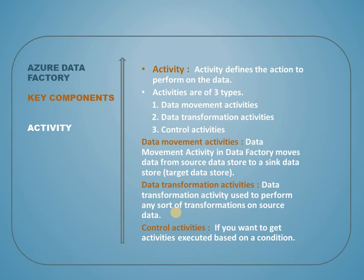Control activities are used when you want to execute activities based on a certain condition, or when you want to invoke other pipelines based on certain conditions. So to recap: data movement activities move data from source to destination; transformation activities handle transformations and complex business logic before loading; and control activities trigger execution based on conditions or invoke other pipelines.